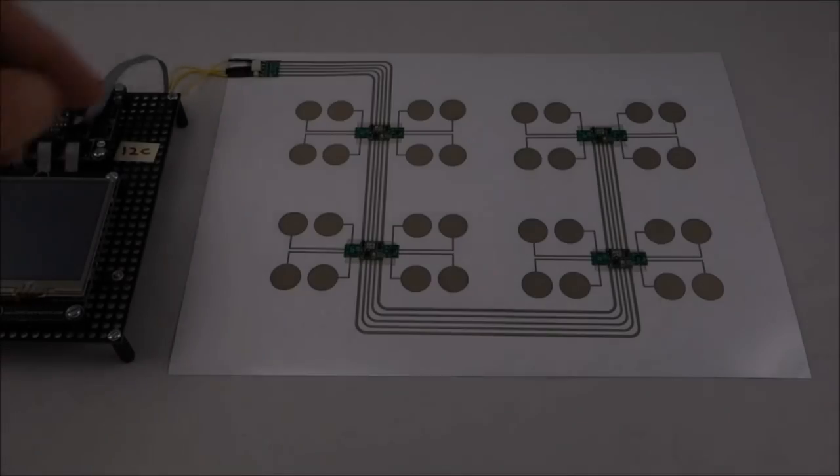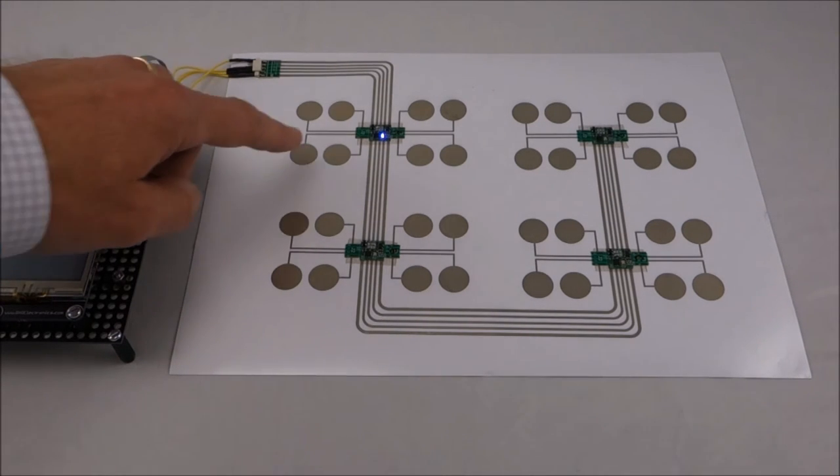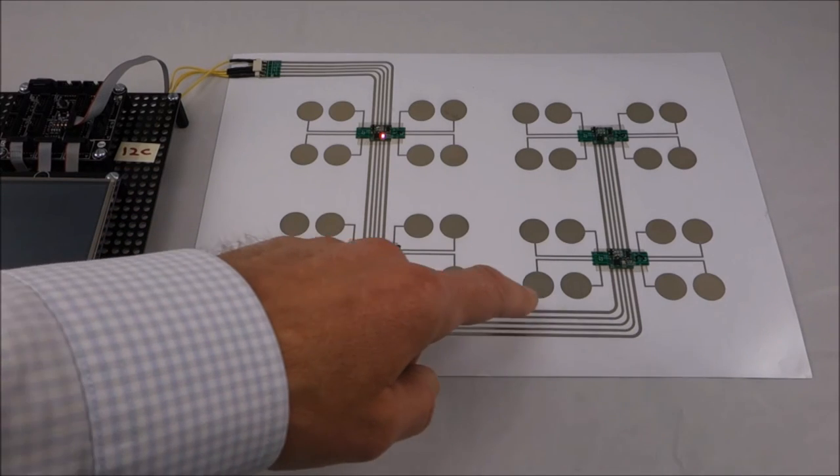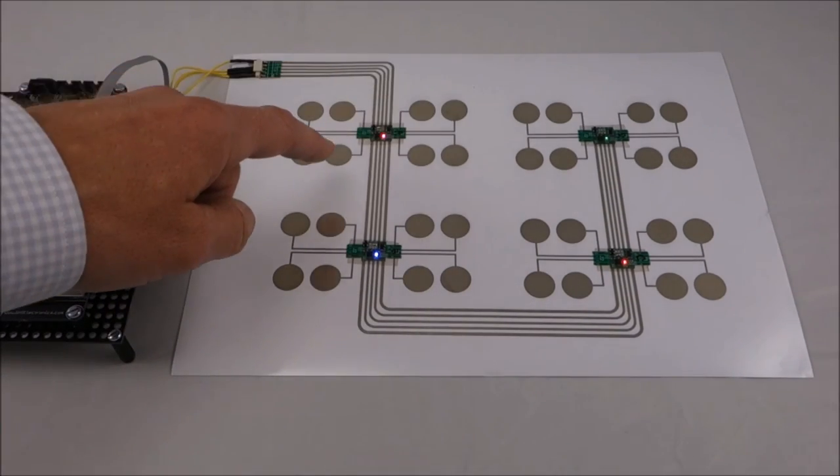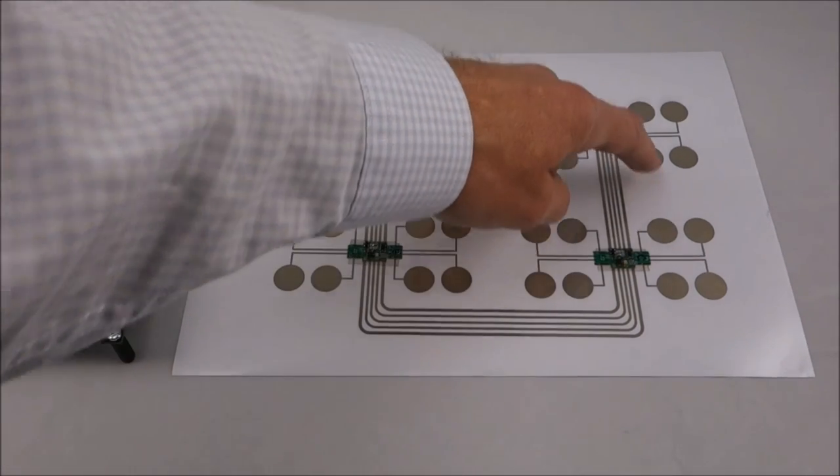As a final example, here we show sticker circuits being used in a bus configuration. Each sticker connects to an I2C bus and also to eight touch electrodes. As touch events are detected, an external microcontroller controls the colour of the relevant LED accordingly.